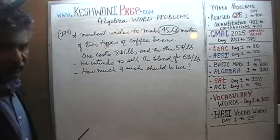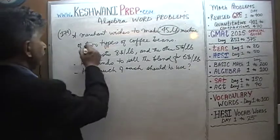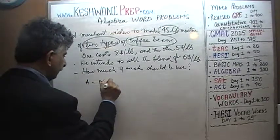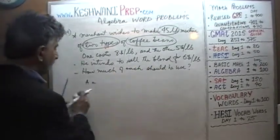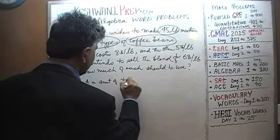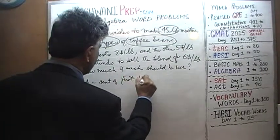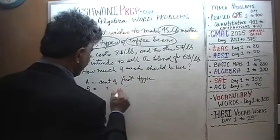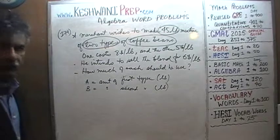Okay, here we go — very straightforward. As always, the first thing we need to do is define our variables. We have two types of coffee beans. Let's call one of them A — A will represent the amount in pounds of the first type of coffee bean. And B will represent the amount in pounds of the second type.